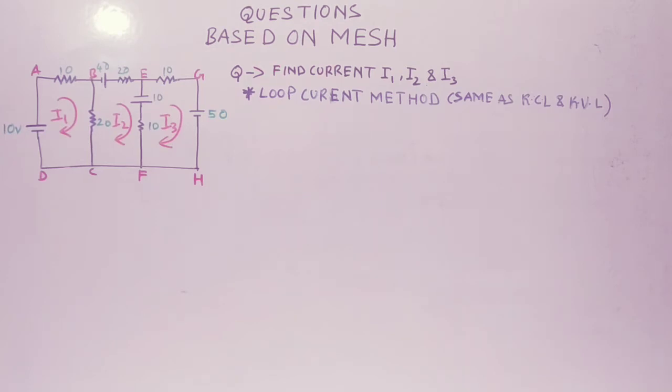The answer is very simple. As you can clearly see, this diagram or circuit consists of one, two, and three different kinds of mesh. A mesh is nothing but a closed kind of circuit. Now we will be using the loop current method, which is same as KVL and KCL, for defining the values of I1, I2, and I3.